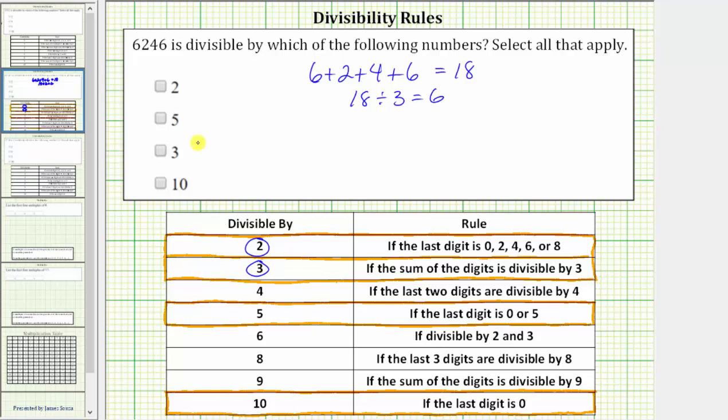And now we'll skip down to the divisibility rule for 5. The number is divisible by 5 if the last digit is 0 or 5. The last digit is 6 in 6,246, and therefore the number is not divisible by 5. So let's go ahead and cross off 5.